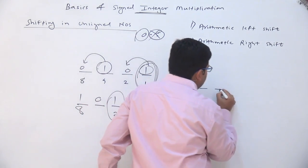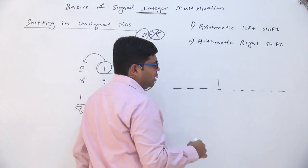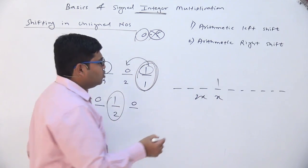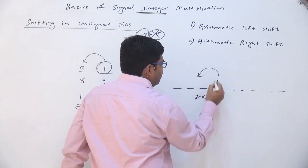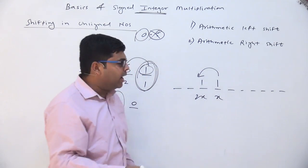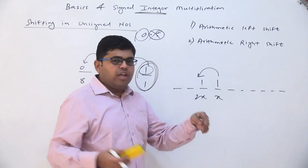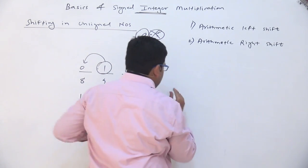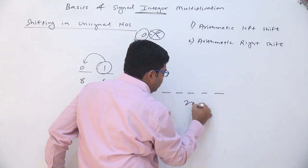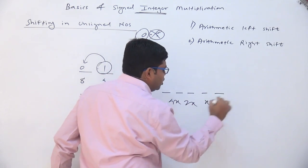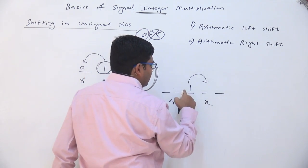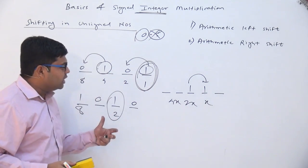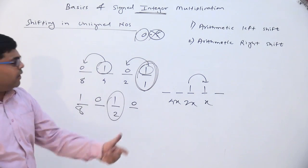Suppose there is some n-bit number and there is a 1 here. If the place value here is x, the place value of the next higher position will be 2x. So if you left shift this 1 to that place, x becomes 2x — it is like multiplying x by 2. Therefore if all place values get doubled, the overall number will also get doubled. Similarly, if you do right shifting, this 1 will be copied from the 2x place to the x place and the value will get divided by 2. This is the reason left shift means multiplying by 2 and right shift means dividing by 2.